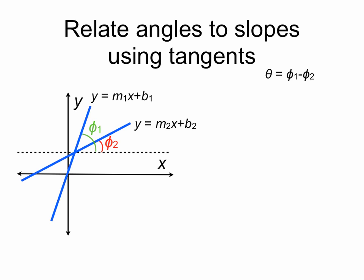We have a way to relate these angles phi1 and phi2 to the slopes of the lines m1 and m2 using tangent functions — specifically, m1 equals the tangent of phi1 and m2 equals the tangent of phi2. So we'll be needing tangents to relate our angles back to the slopes.